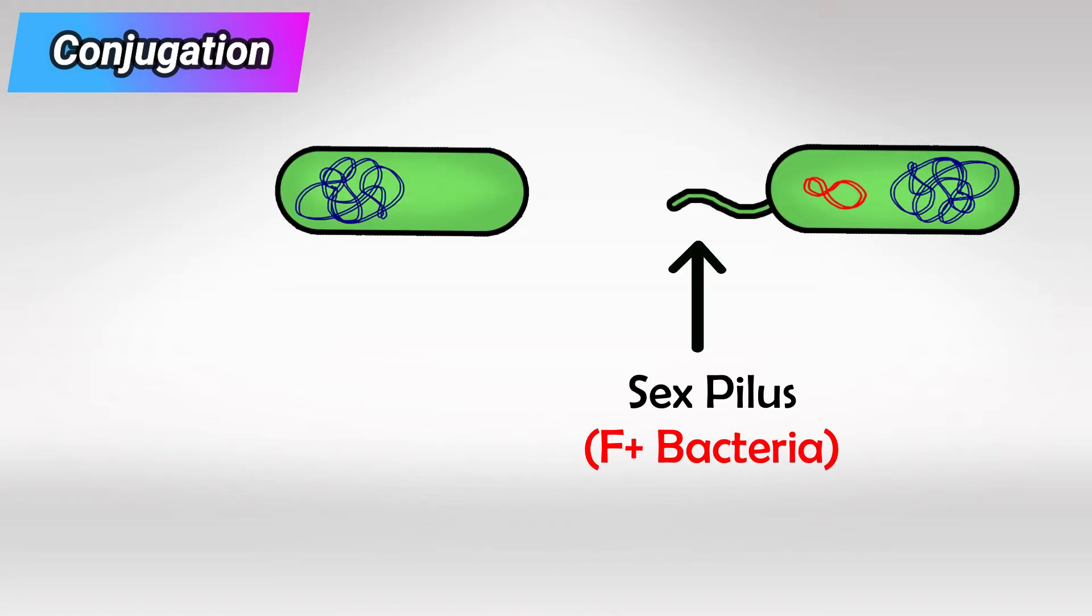Once isolated, the bacteria forms what we call a sex pilus. Keep in mind that if the bacteria has a sex pilus, we call it F positive bacteria. If it doesn't have this sex pilus, we call it F negative bacteria.